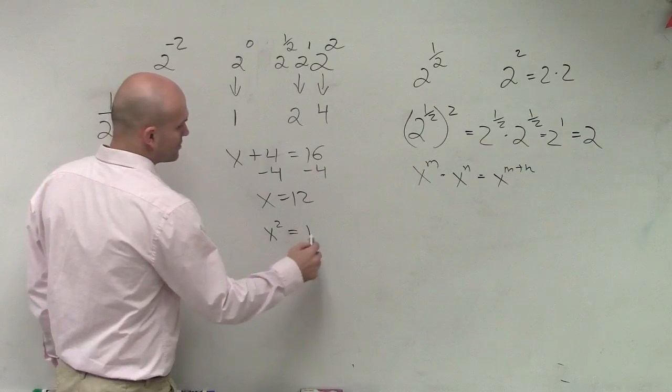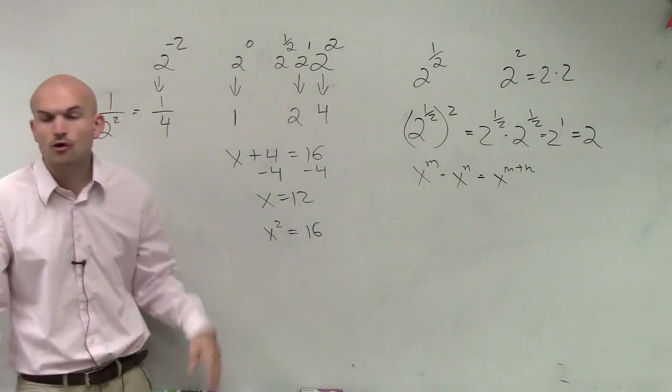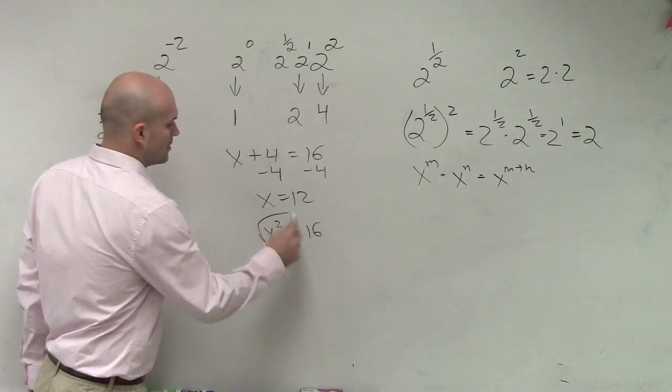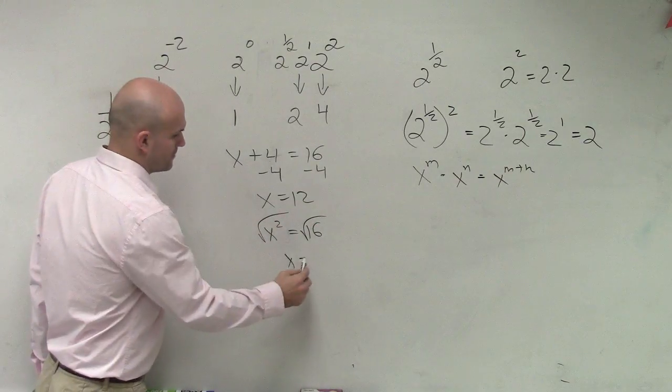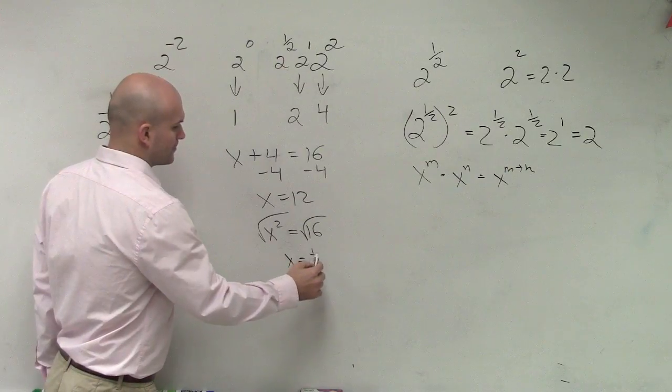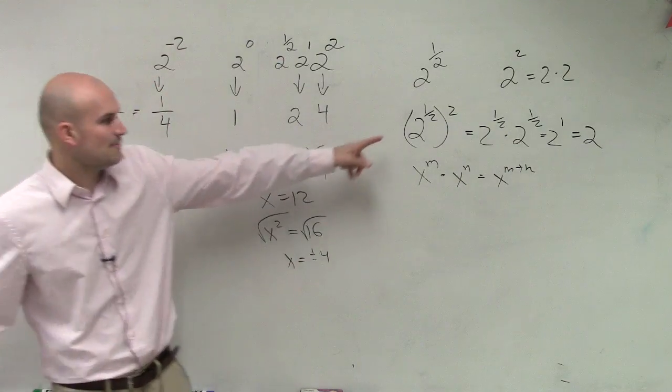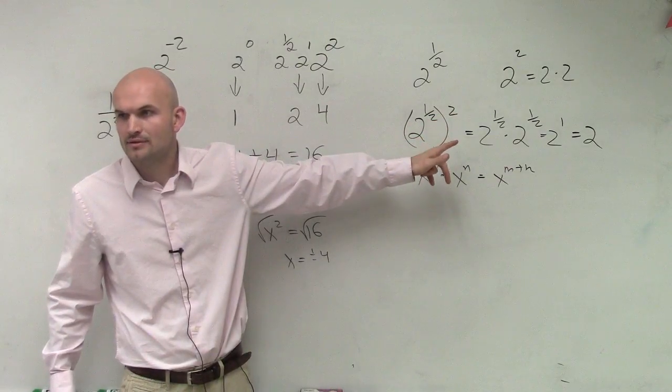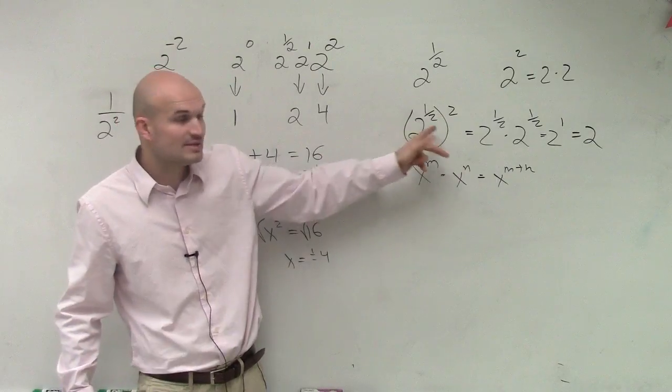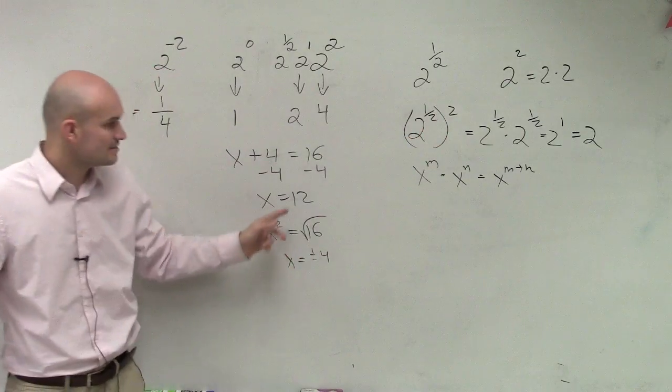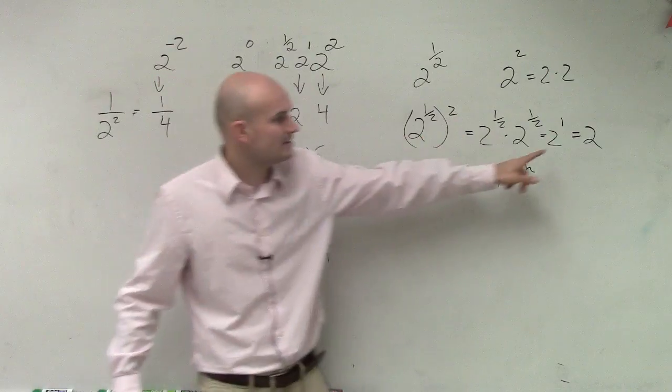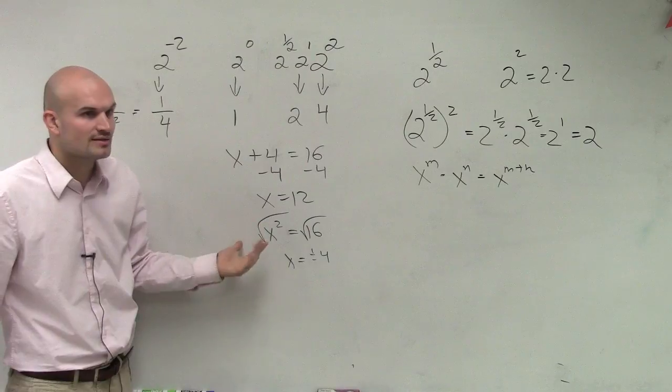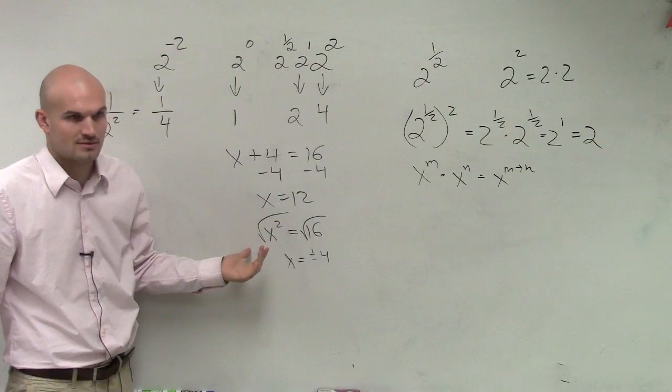Then what about if I did this? x squared equals 16. Now what would be the inverse operation of squaring? Square root. But hold on a second. We just said that the inverse operation of squaring is raising it to the 1 half power. Didn't we say raising something to the 1 half power and then squaring it gives you the same number? And if you square root something squared, that gives you back to the same power too.